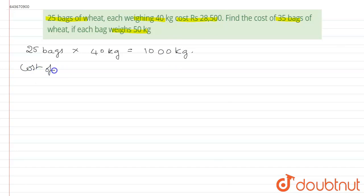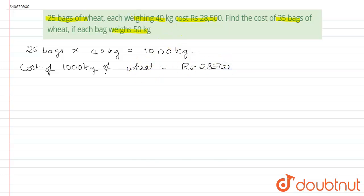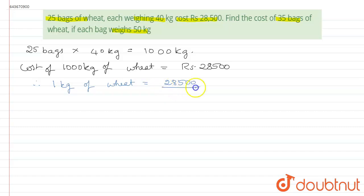The cost of 1,000 kg of wheat is rupees 28,500. Now we find the cost of 1 kg of wheat. Therefore, 1 kg of wheat costs 28,500 ÷ 1,000 rupees.